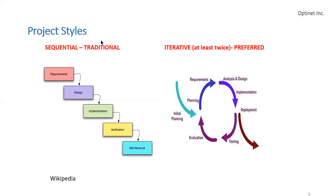There are several types of project styles. The main ones are sequential — the traditional approach — where you start with the requirements, do the design, implement it, verify it, and then maintain it.